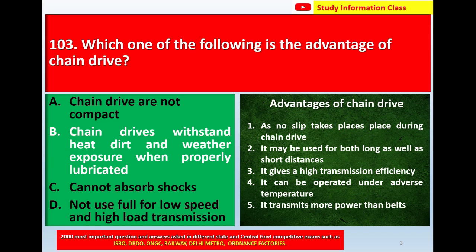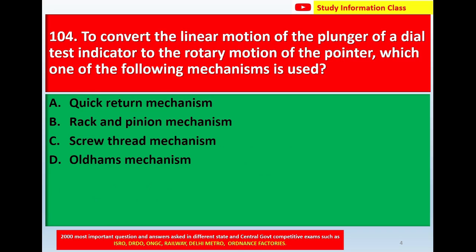Next question, number 104: To convert the linear motion of the plunger of a dial test indicator to the rotary motion of the pointer, which one of the following mechanisms is used? Option A: quick return mechanism. Option B: rack and pinion mechanism. Option C: screw thread mechanism. Option D: holes mechanism.